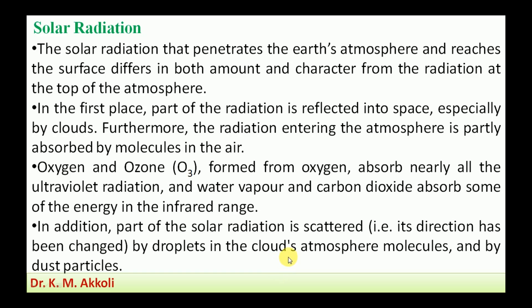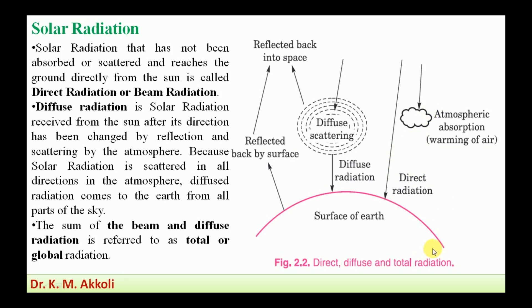The radiation above the atmosphere and the radiation reaching the earth's surface differ in both amount and character. Now, considering the types of solar radiation reaching the earth's surface: the sun's radiation reaching the earth's surface directly is called direct radiation, also known as beam radiation.